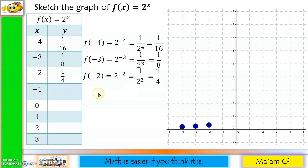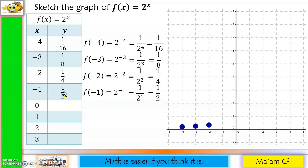For negative 1: f(-1) = 2 raised to negative 1, which becomes 1 over 2 to the first power. Since 2 to the first power is 2, we have 1 half. We plot negative 1 at 1 half by dividing the unit into 2 parts, placing the point at the middle.